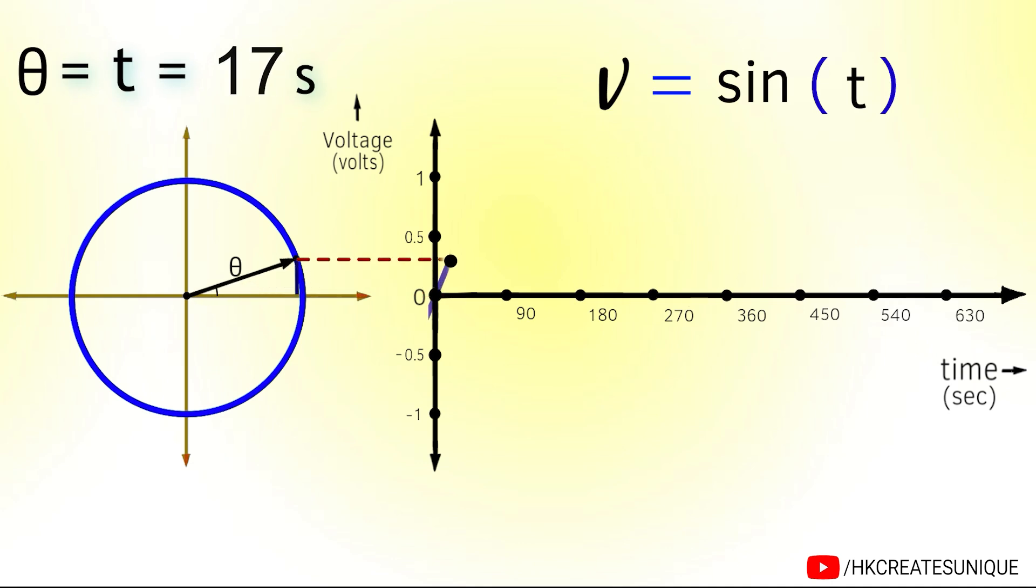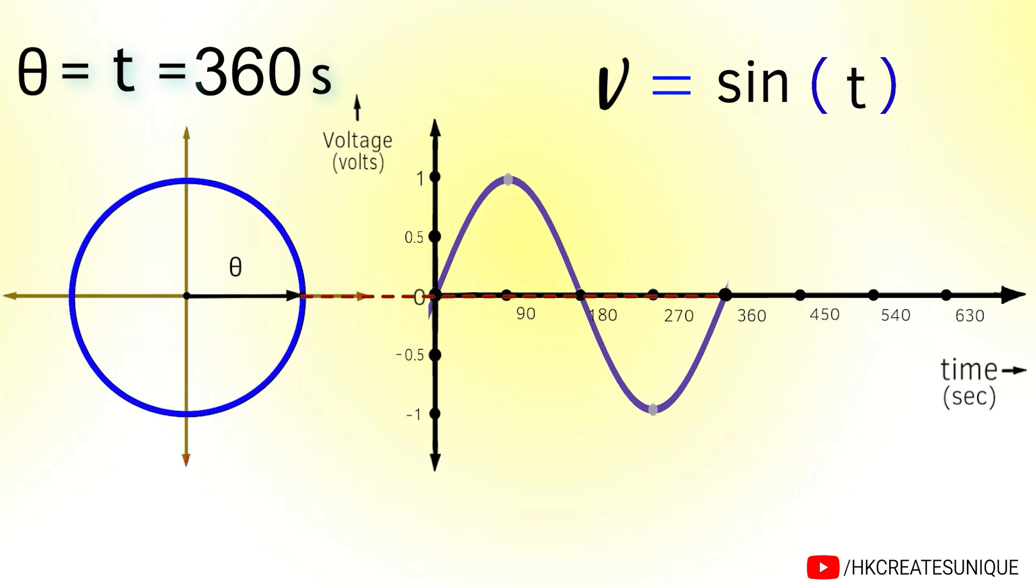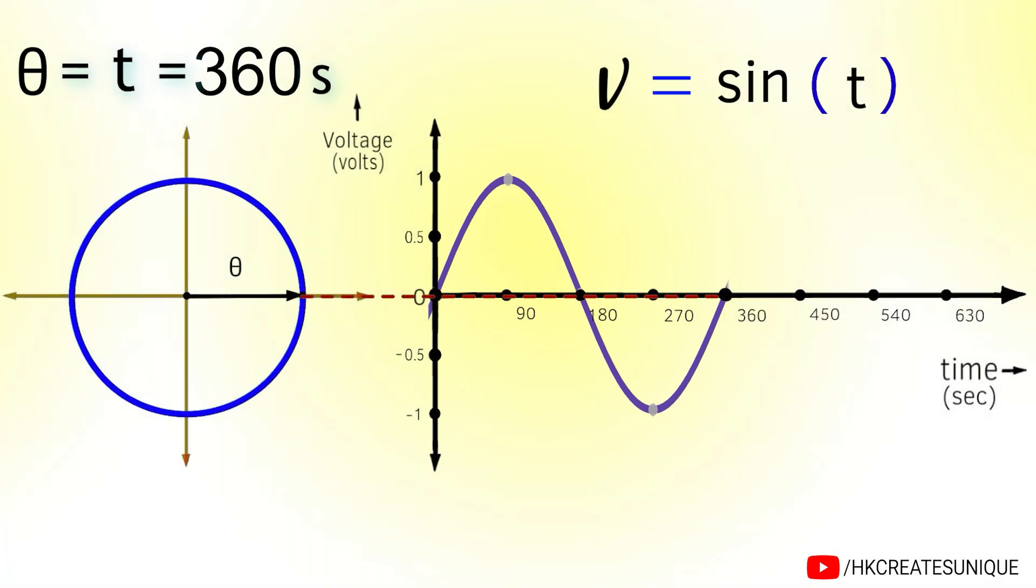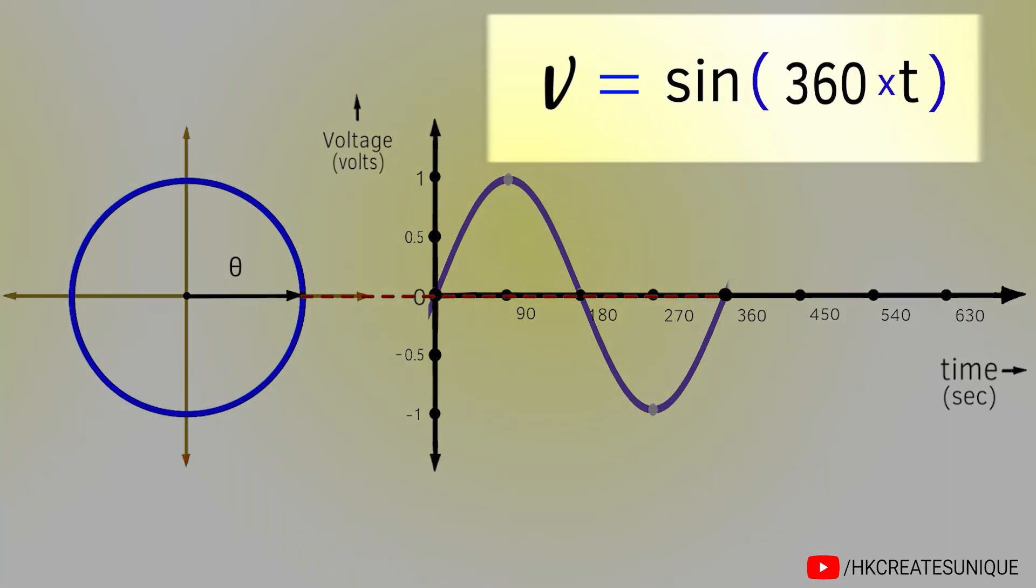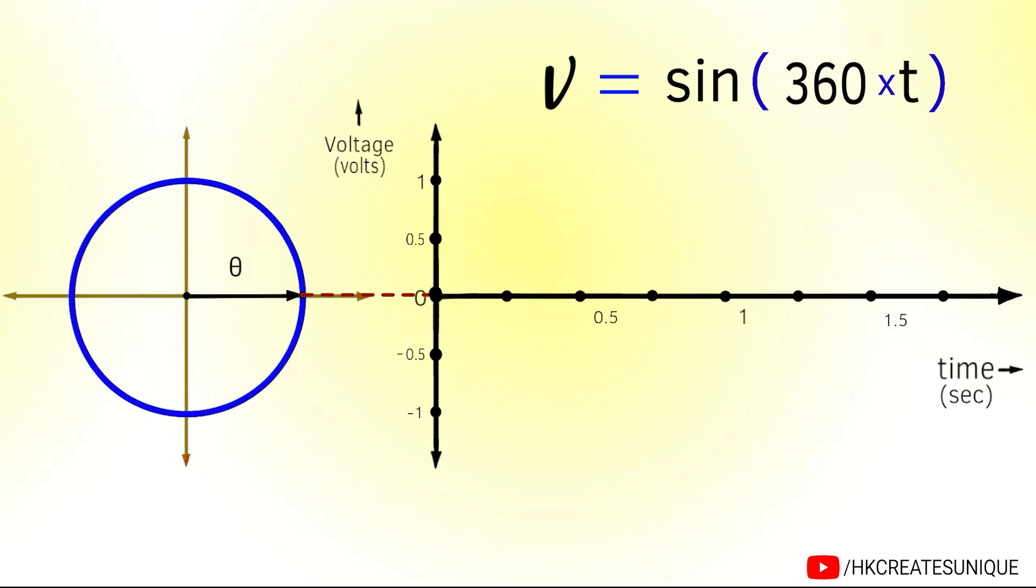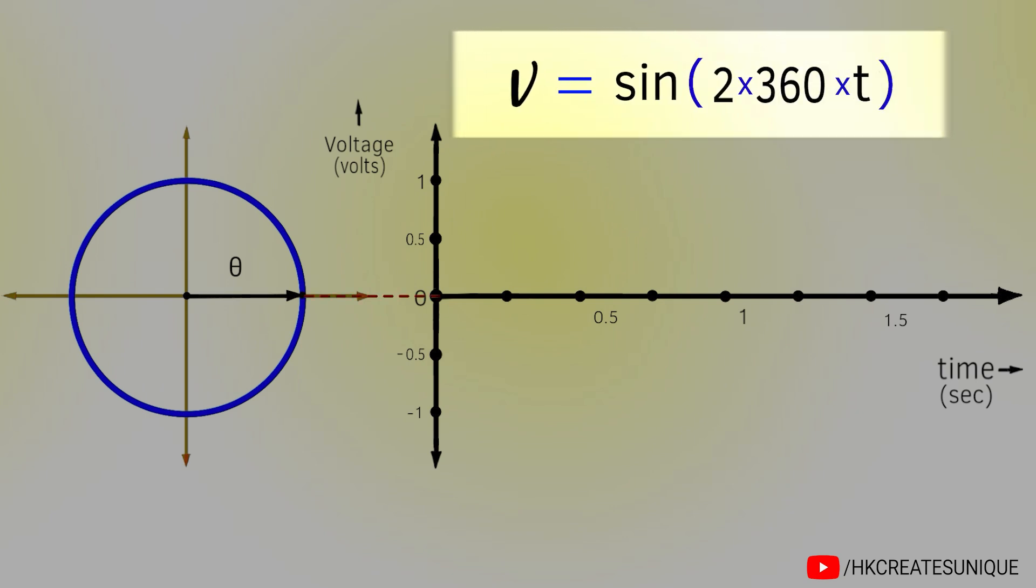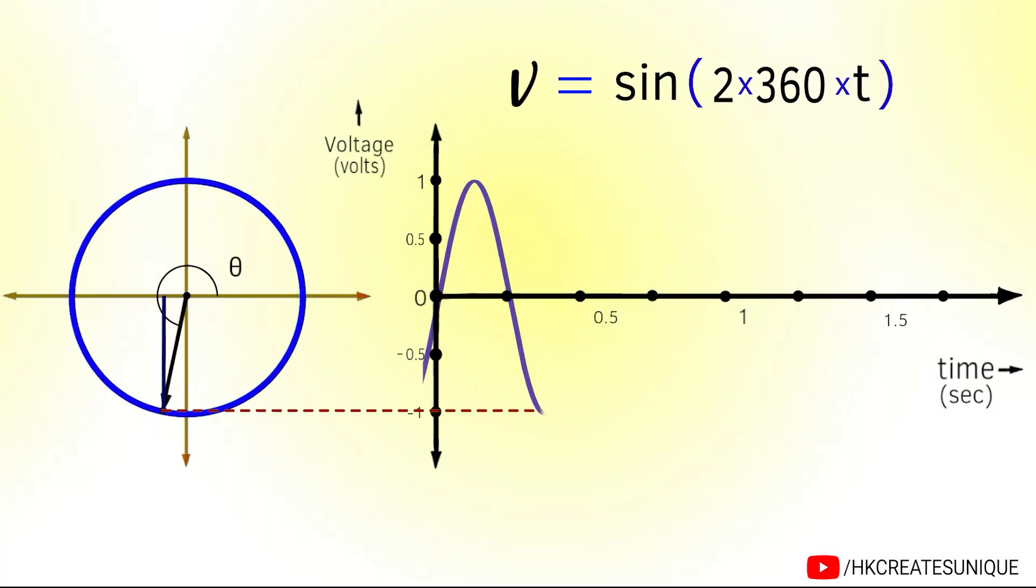To complete one cycle, it takes 360 seconds because the total angle is 360 degrees. To get one complete cycle in one second, you need to simply multiply time by 360. Now as time reaches one second, the angle becomes 360 degrees and one full cycle is completed. If you multiply by 2 in this, as time reaches one second, two cycles will be completed.